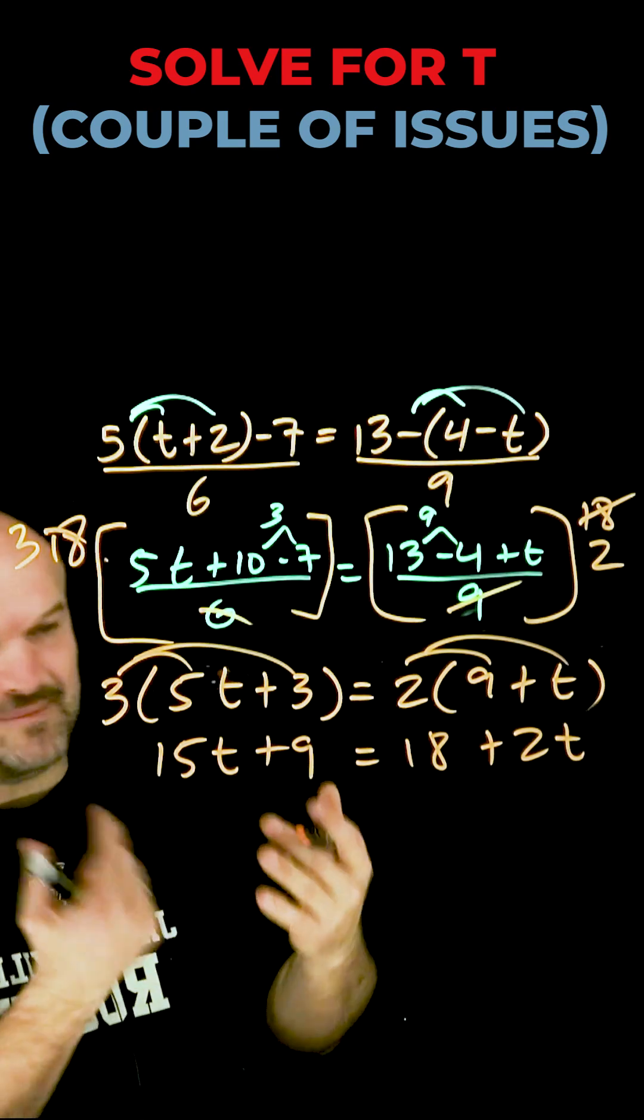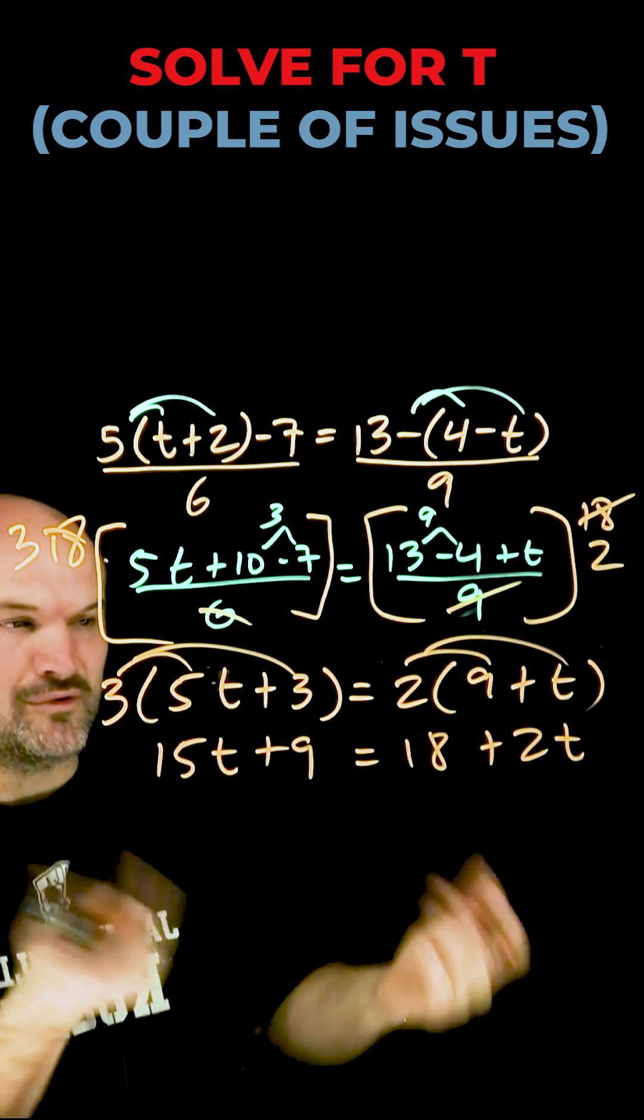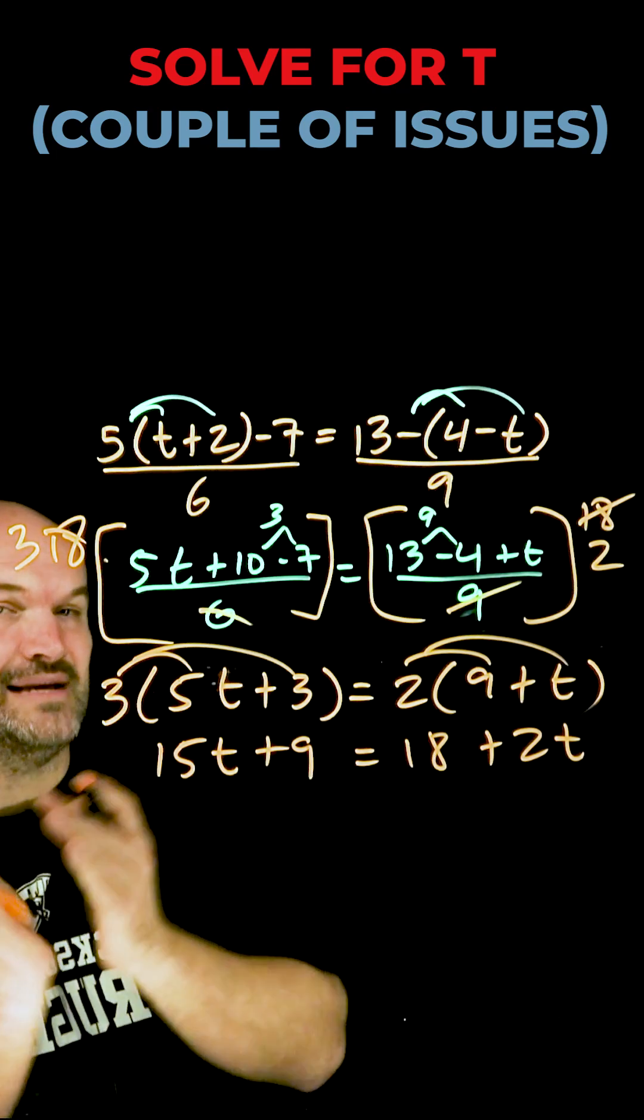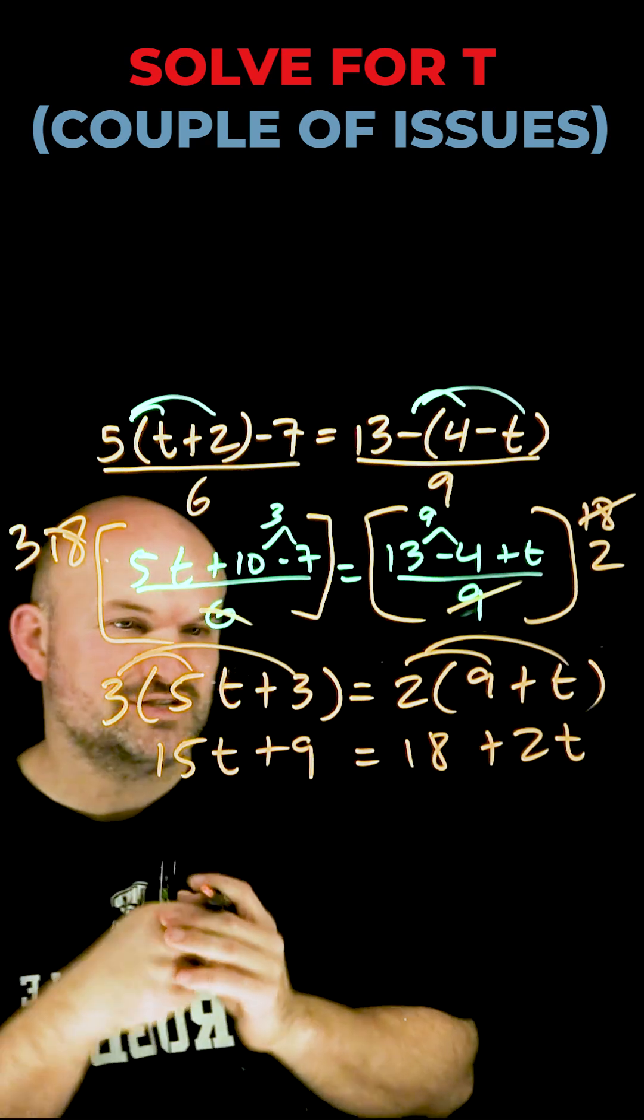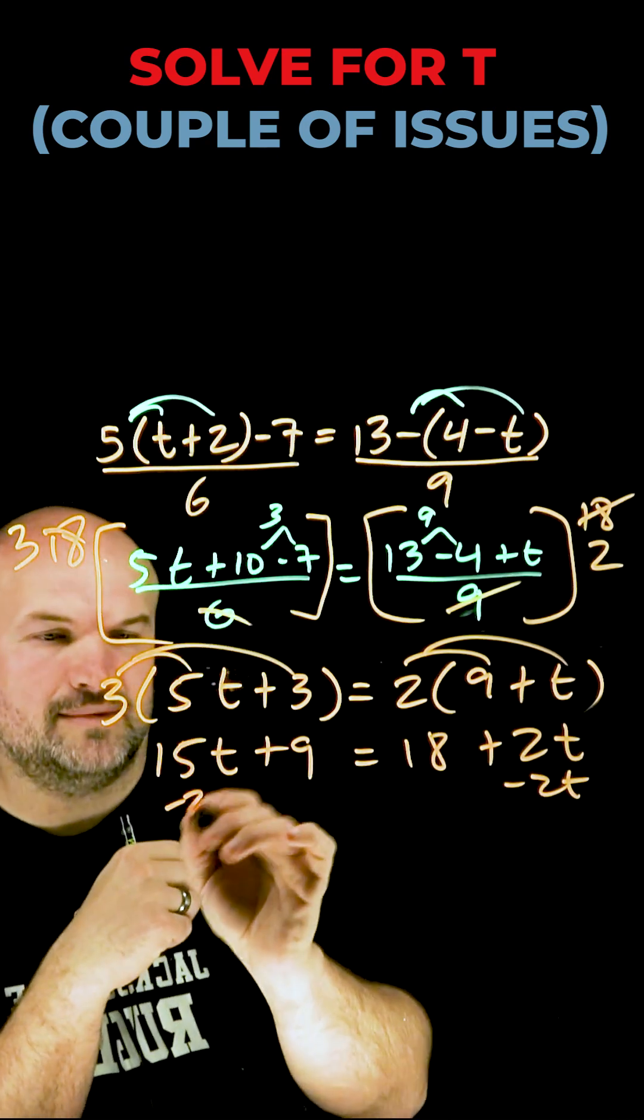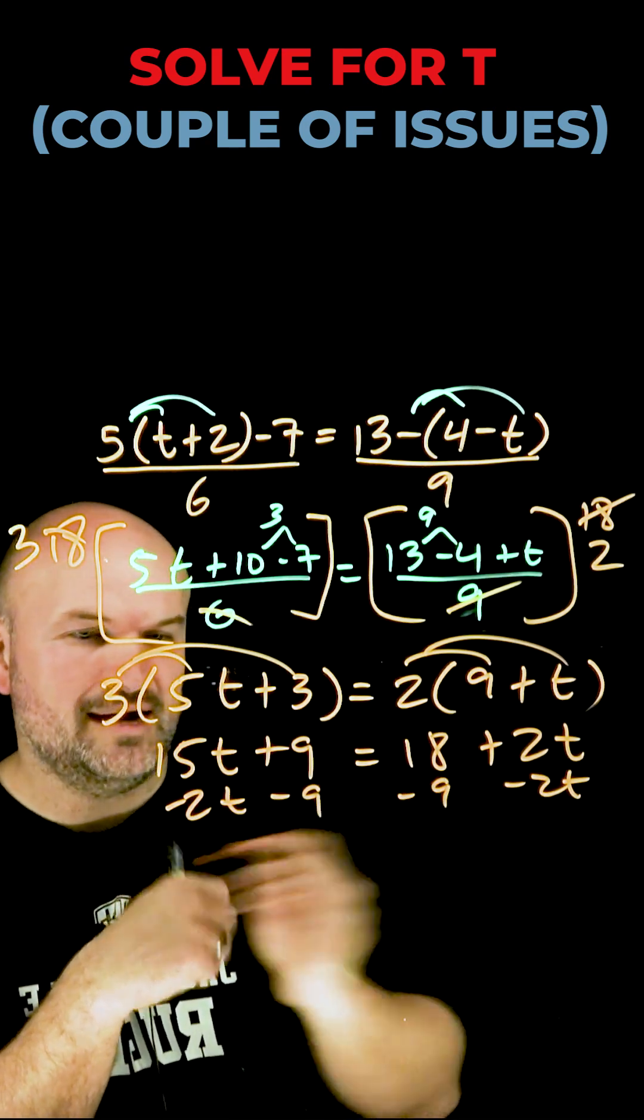Okay, so now I have my t's outside my parentheses. I don't have any more fractions. I just need to get my t's to the same side. And then just use my inverse operations to go ahead and solve. So subtract a 2t on both sides. Subtract a 9 on both sides.